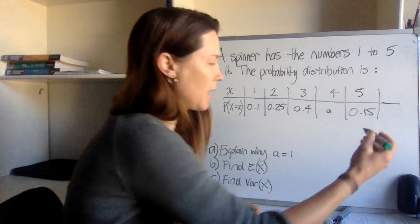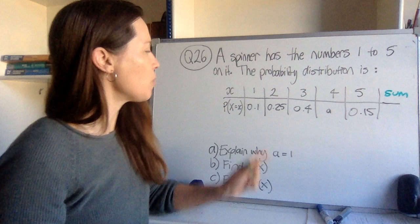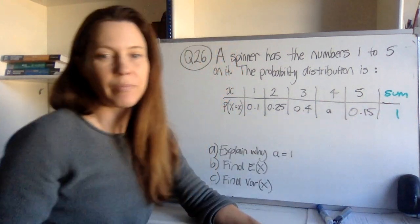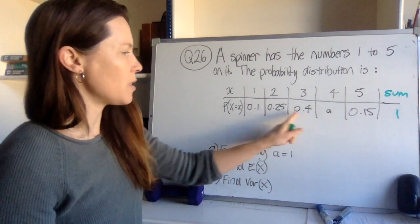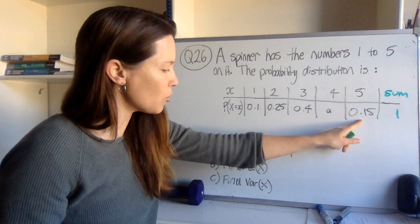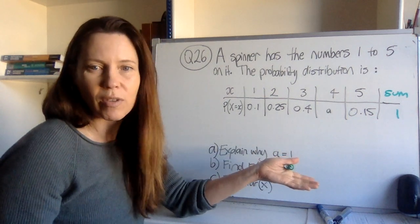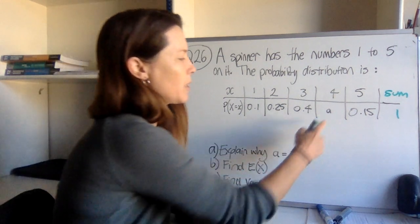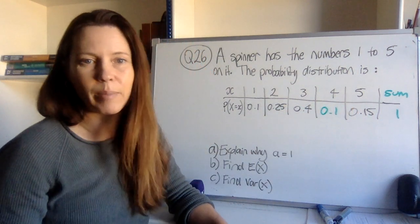The thing that hasn't been given to you is that little column on the end that adds things up, but we should know that all of these probabilities need to add to 1. So explaining why a equals 1, you could add these four numbers together and you should get 0.9. And then in the explanation, I just write a sentence saying all the probabilities must add to 1, therefore a must equal 0.1 to make that happen.